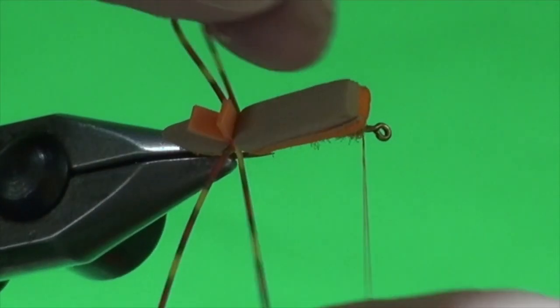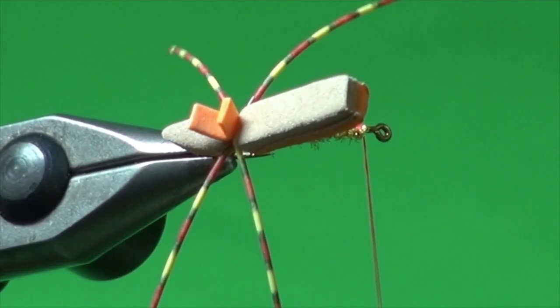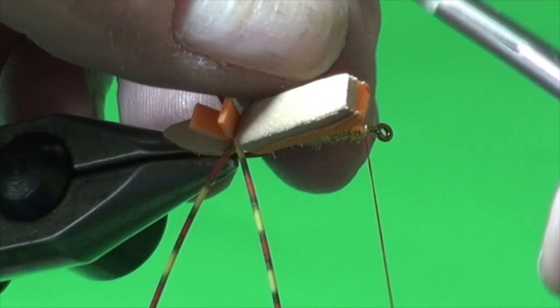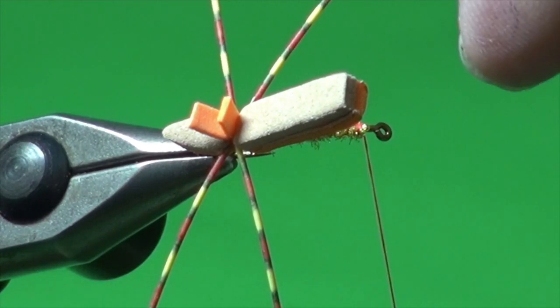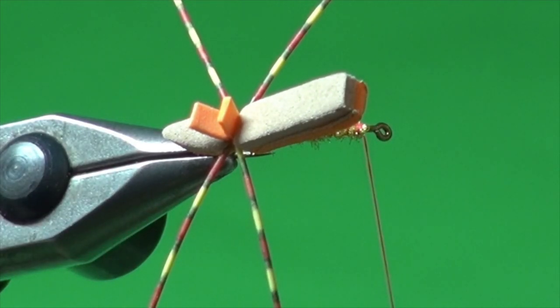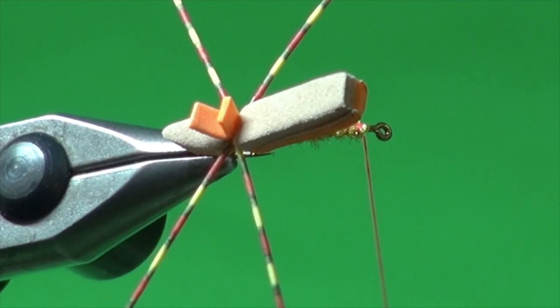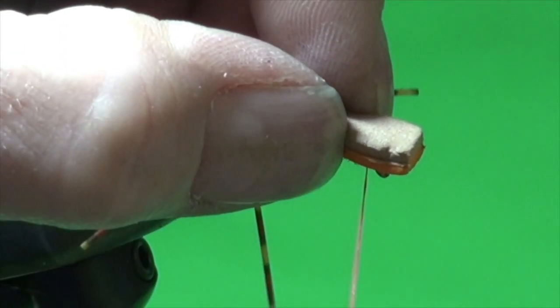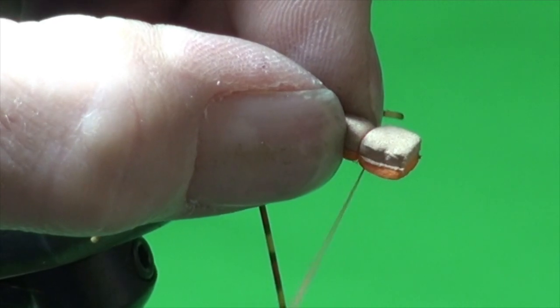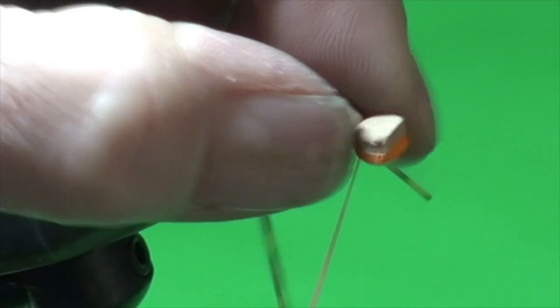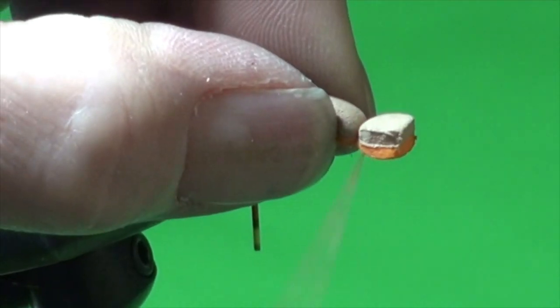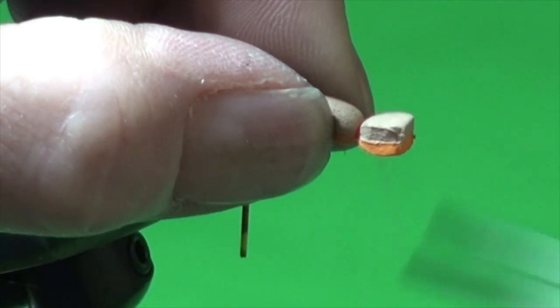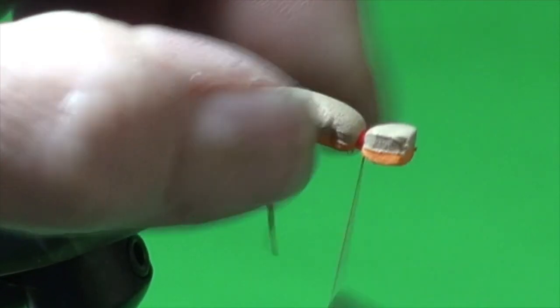And probably trim these legs at this point because they're getting in the way, or at least give them a rough trim. And then we're going to pull the foam down again. Once, twice. And then really start to walk that thread forward and build up another little band.